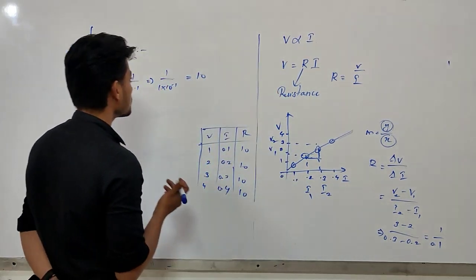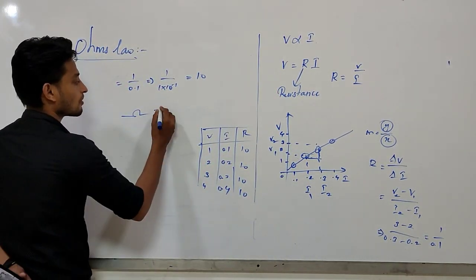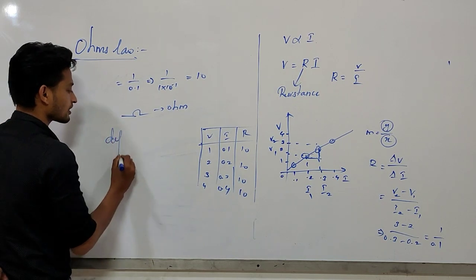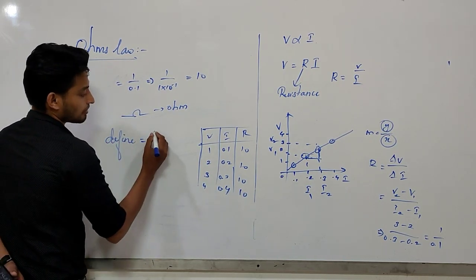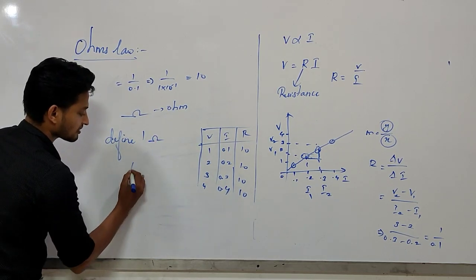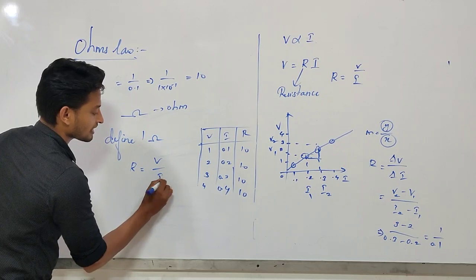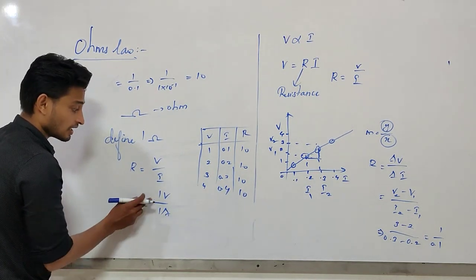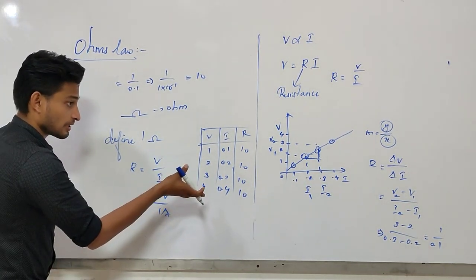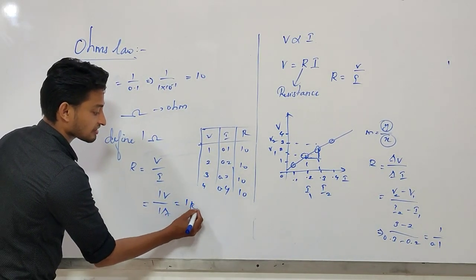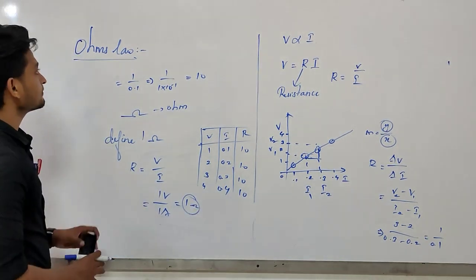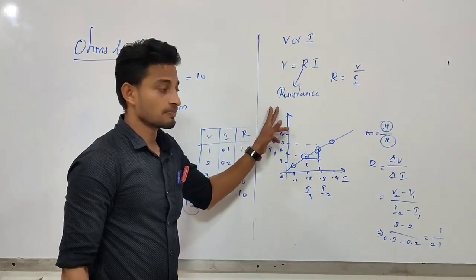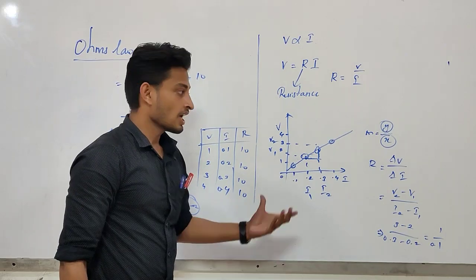Now, define 1 ohm. 1 ohm is defined using the resistance formula: R equals potential difference divided by current. If we substitute 1 volt divided by 1 ampere, we get resistance equal to 1 ohm. That is the definition of 1 ohm. You can use this graph and this resistance formula — it is very simple and very important.